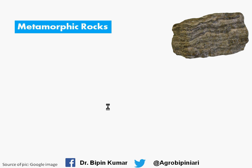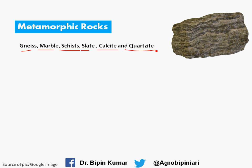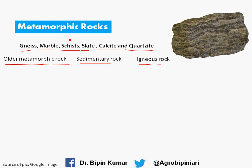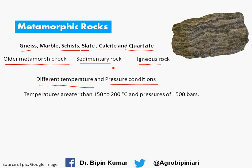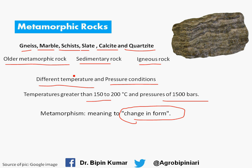Now moving toward metamorphic rocks. Examples include gneiss, marble, schist, slate, calcite, and quartzite. Metamorphic rocks may be formed from older metamorphic rocks, sedimentary rocks, or igneous rocks — they can be formed from any of these three when different temperature and pressure is imposed on them. The temperature should be near about 150 to 200 degrees centigrade and pressure should be about 1500 bar, causing metamorphism — changes in the original structure.